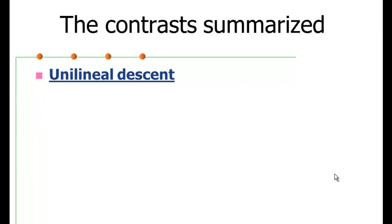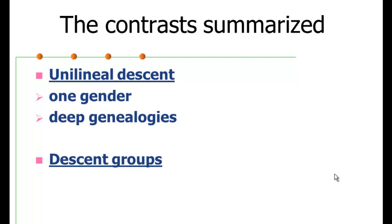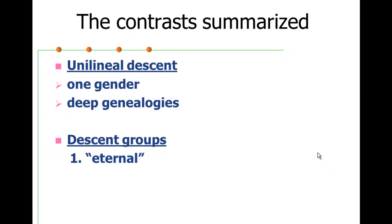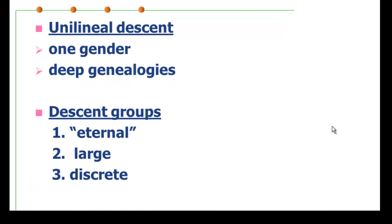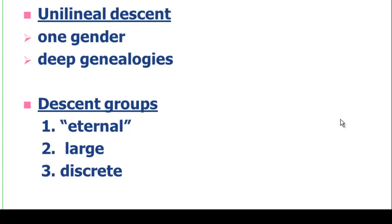So let's summarize some contrast here. Unilineal descent involves one gender and can create very deep genealogies using one gender. And descent groups that result from unilineal descent have all the characteristics of corporate social groups. They're hypothetically eternal. They can go on as long as they can continue recruiting members. They can get quite large. And certainly kin descent groups don't get as large as modern states or corporations, but they still might have hundreds or in the low thousands of members. And they can have very discrete boundaries in terms of you belonging to just one of those groups, not multiples.